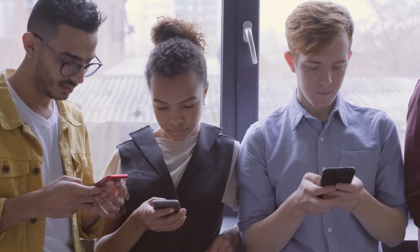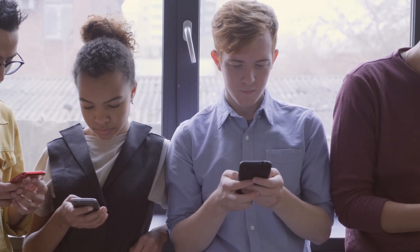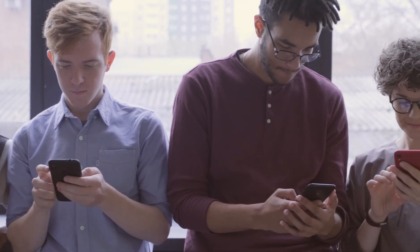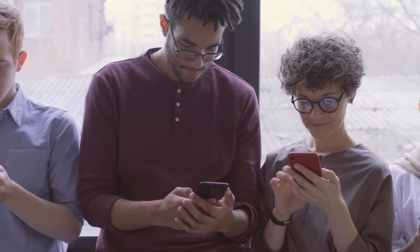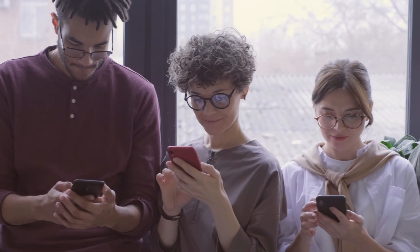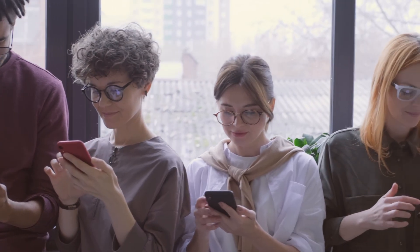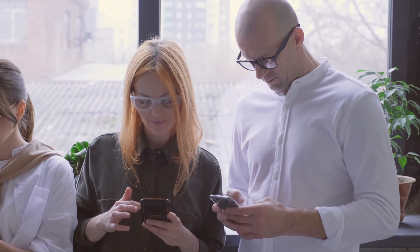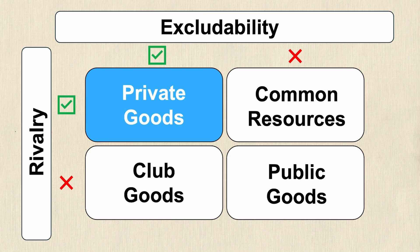One more example to drive it home would be something like a smartphone. It's excludable — you need to purchase it and anyone who doesn't can't use it. However, it's rivalrous because you can't all use the same smartphone at the same time. Again, most types of goods that you think of would be private goods.